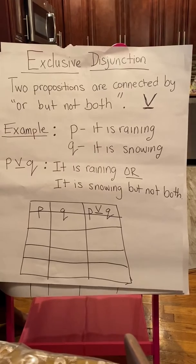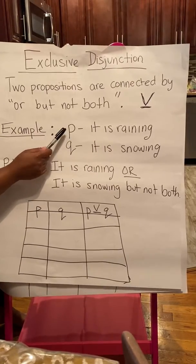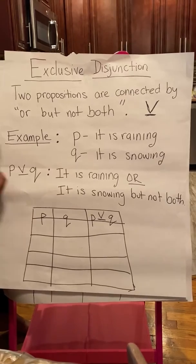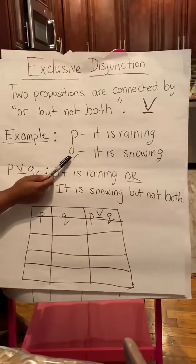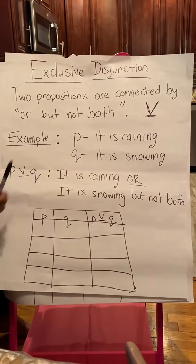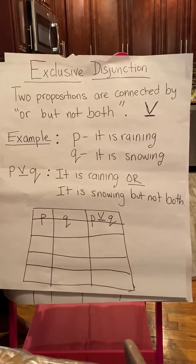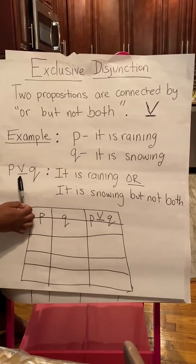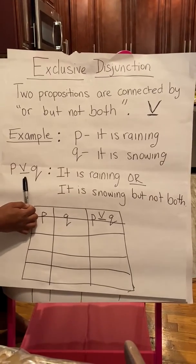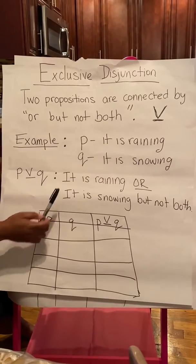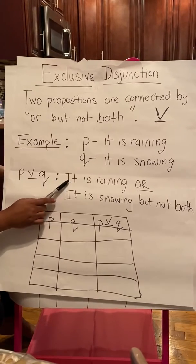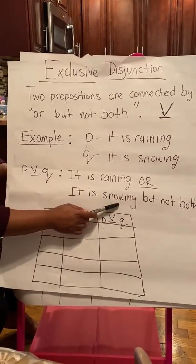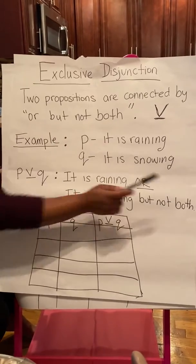An example of this is when you have a statement P: 'it is raining,' and then you have a proposition Q: 'it is snowing.' If I were to write P exclusive disjunction Q, that means it is raining or it is snowing, but not both.